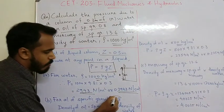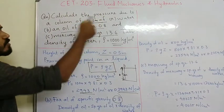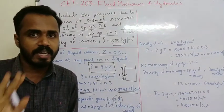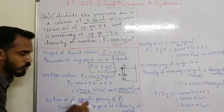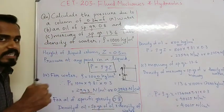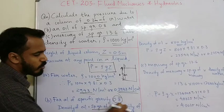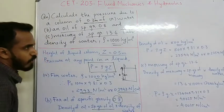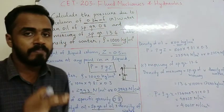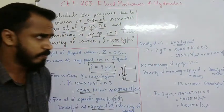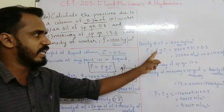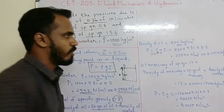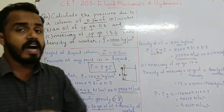For oil of specific gravity 0.8: the density of oil equals specific gravity of oil multiplied by the density of water. So 0.8 × 1000 equals 800 kg/m³. Then P = 800 × 9.81 × 0.3 = 2354.4 N/m².